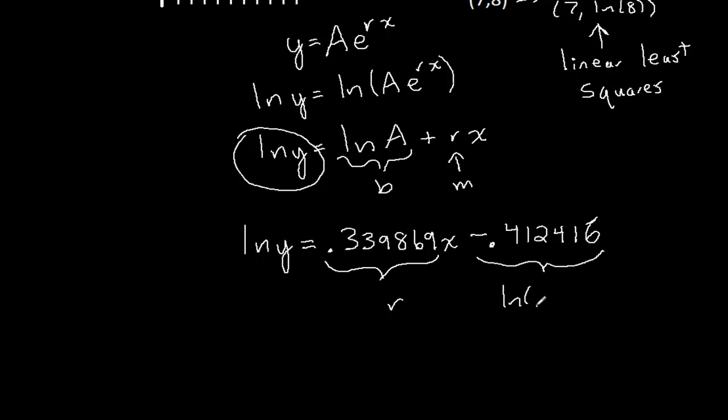And this is the natural log of A, the natural log of the starting value. A is just what we get when we plug in x equals 0. So, I have the r is about 0.339869, and then ln(A) is about negative 0.412416.